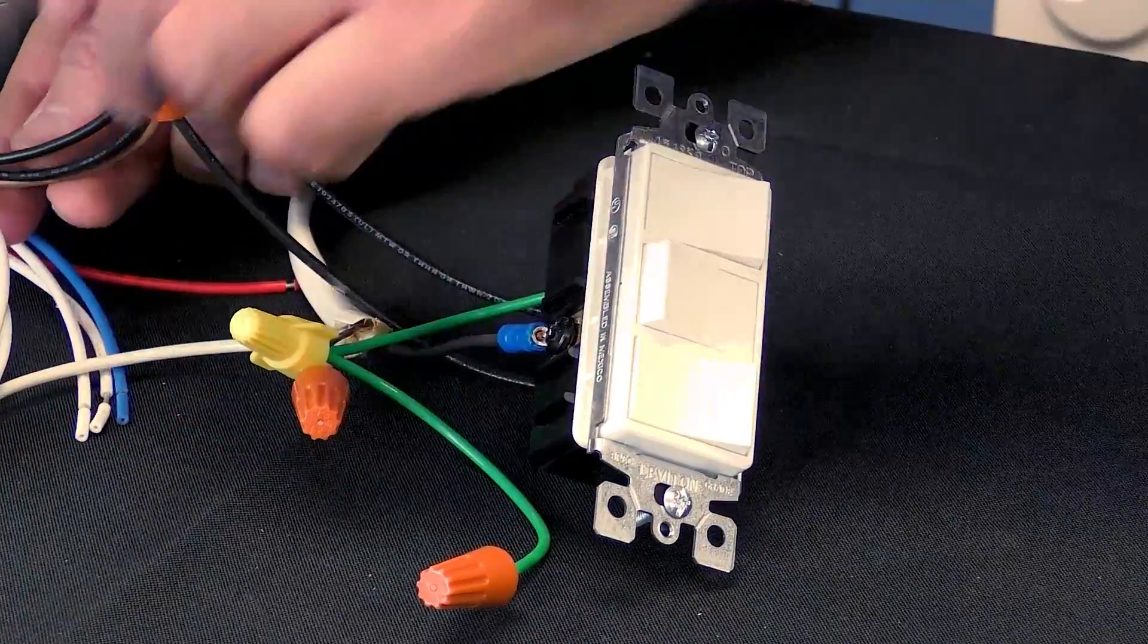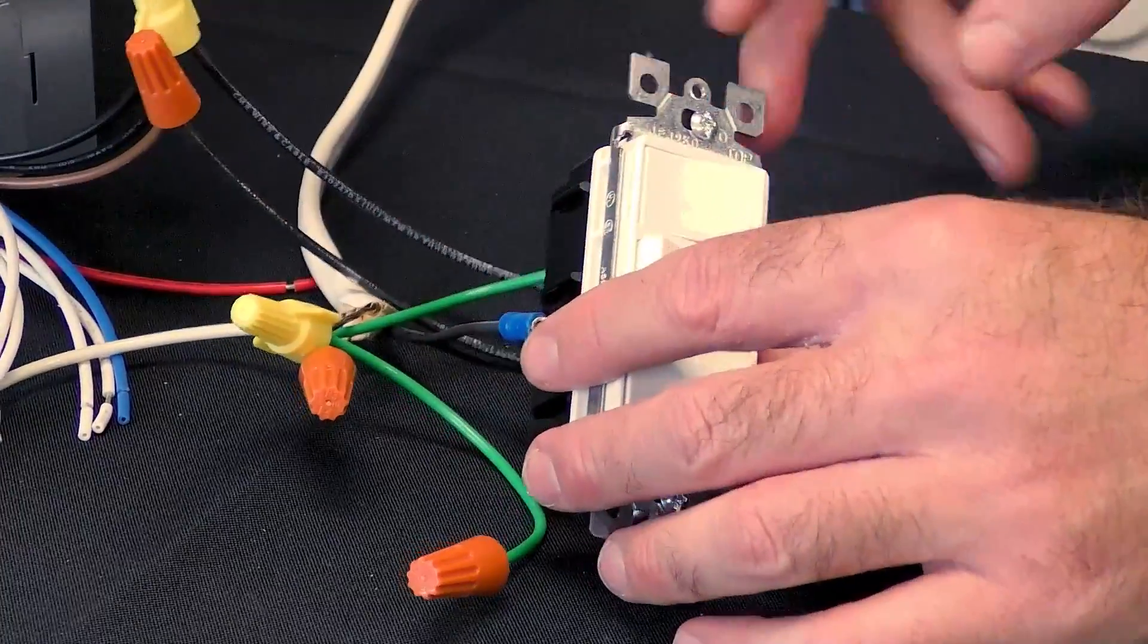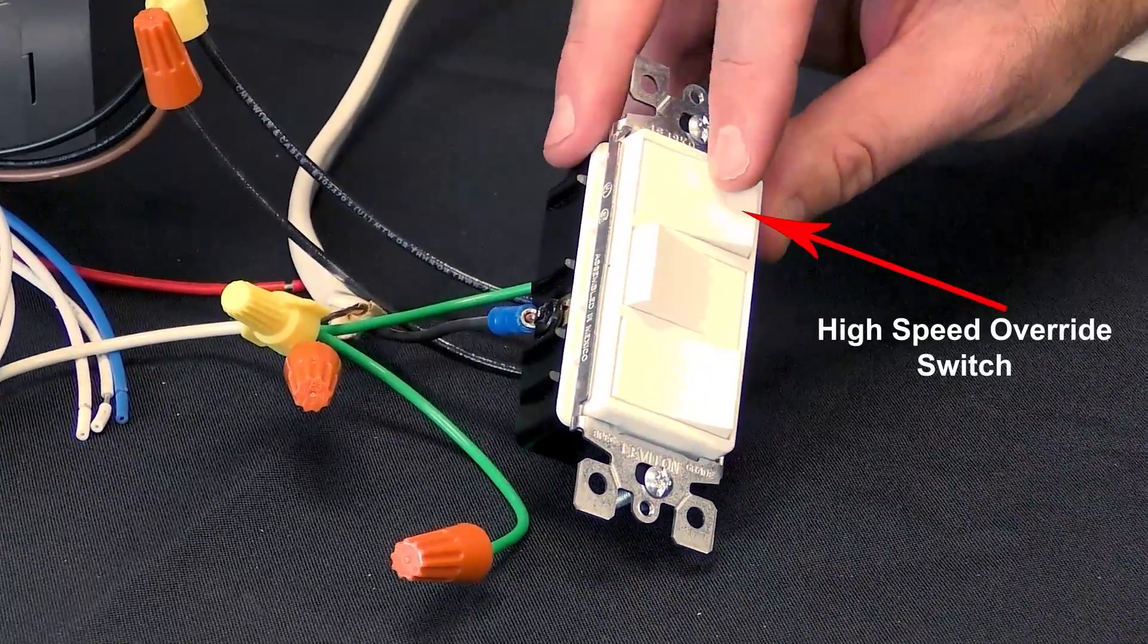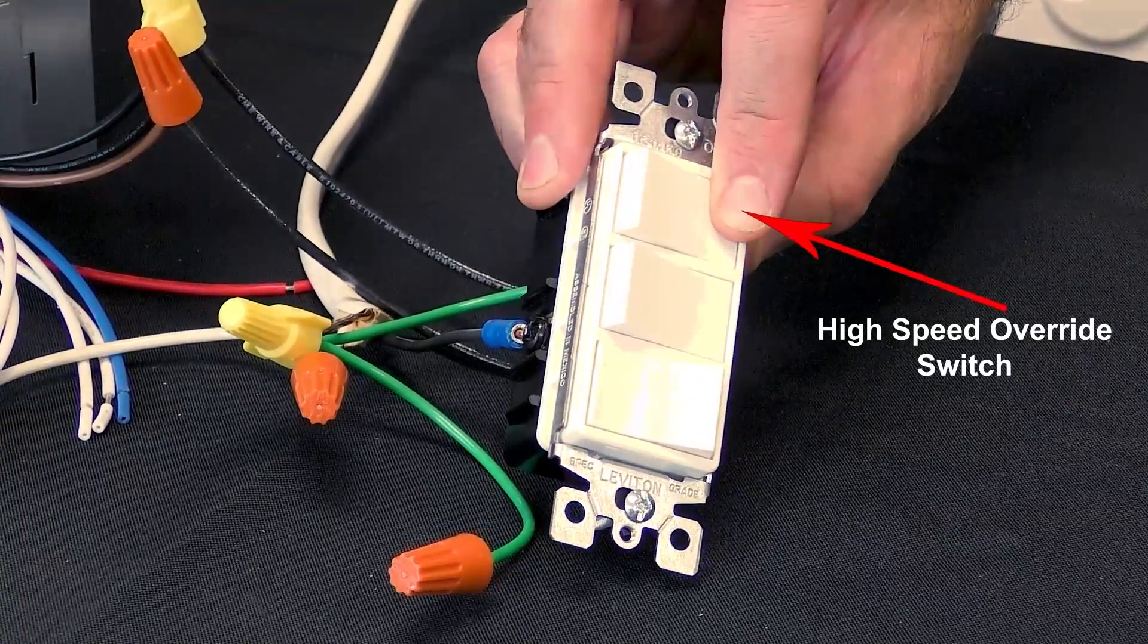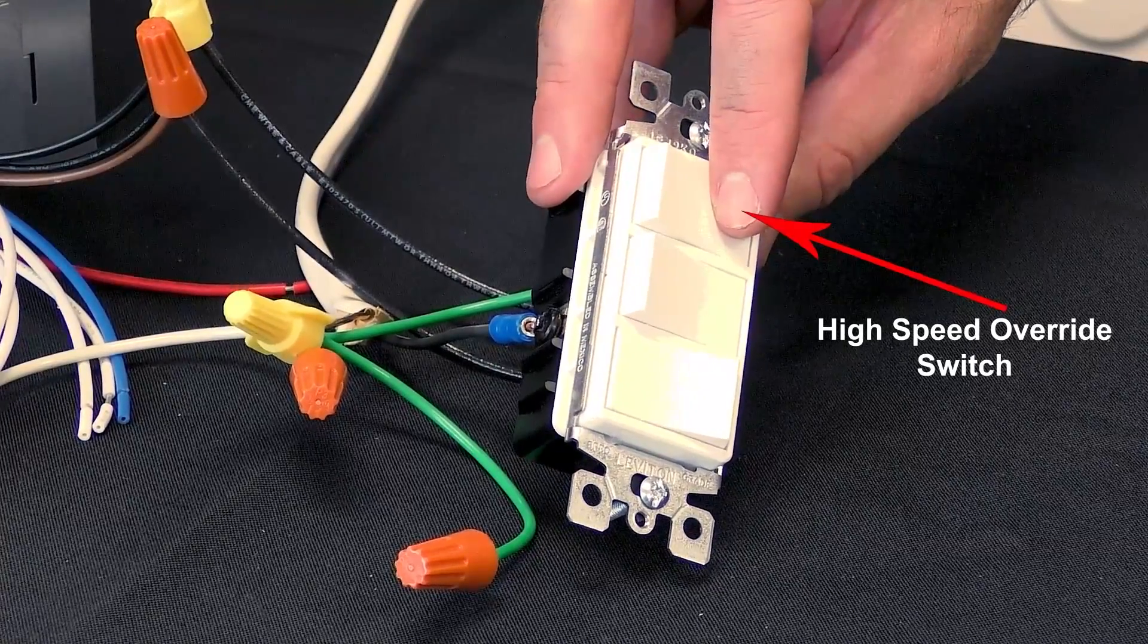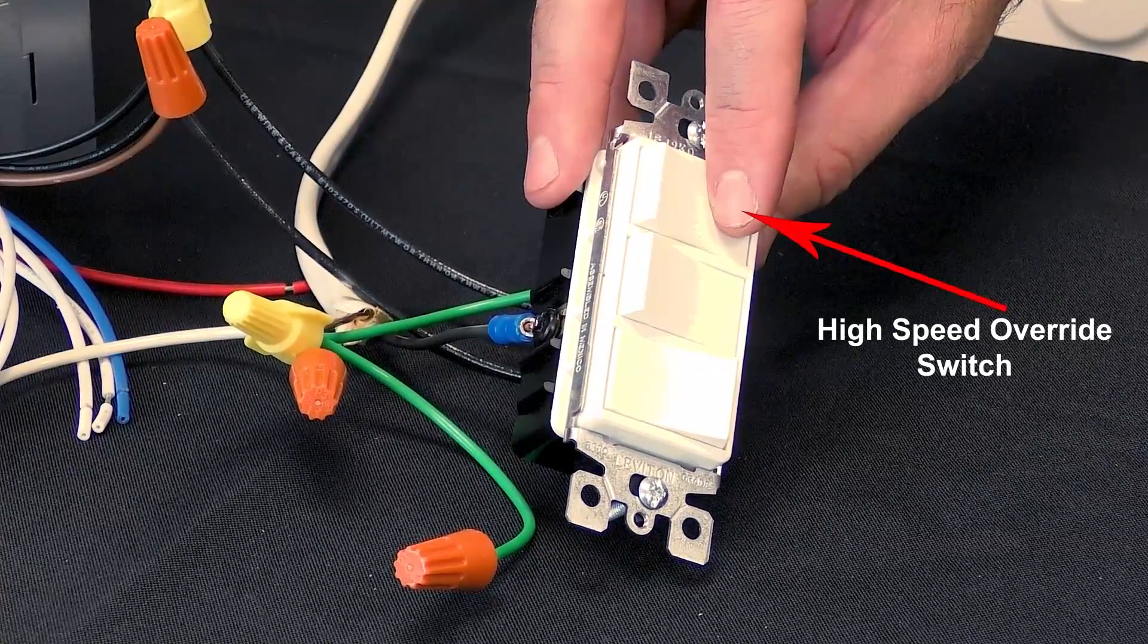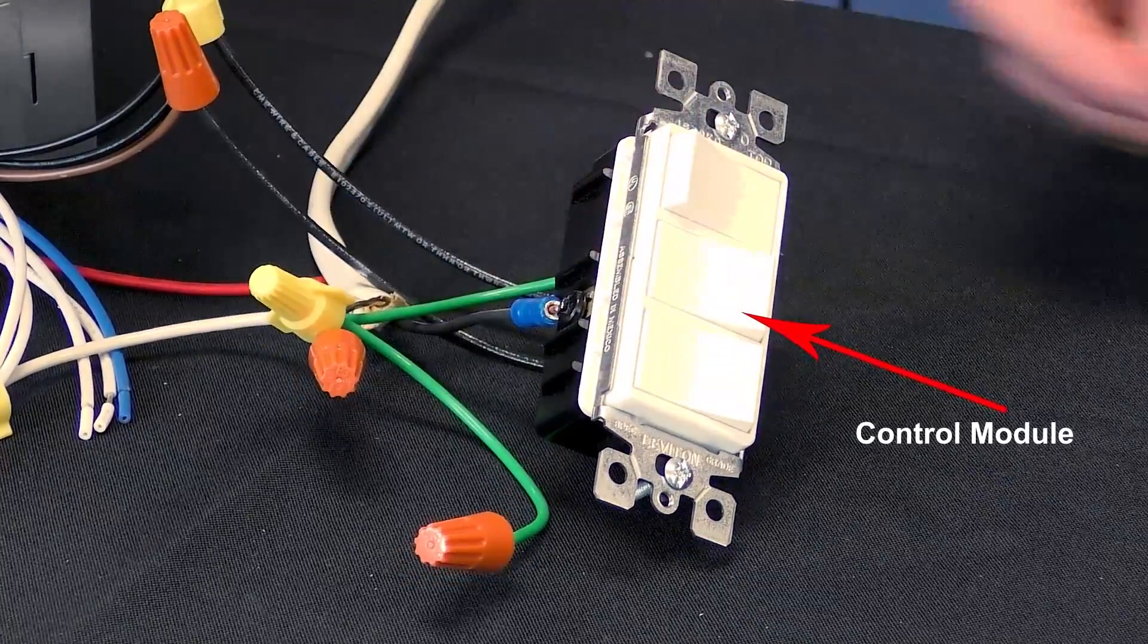The motor wiring harness and the associated switch is sometimes referred to as the high speed override switch, which overrides the control module operation to manually run the fan motor on high speed. It also runs the fan on high speed when the control module is switched to off.